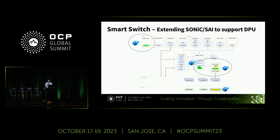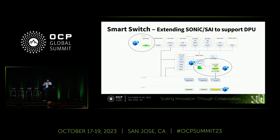Now I'll talk about how programming happens through SONIC to the DPU. A DASH container or gNMI container running on the DPU can accept all the APIs and program the DASH objects — the DPU-level objects — on Redis. The typical flow is OrchAgent subscribing to that and pushing all these through the SAI layer to the DPU. The DPU syncd can then program the DPU with all these DASH SAI APIs.